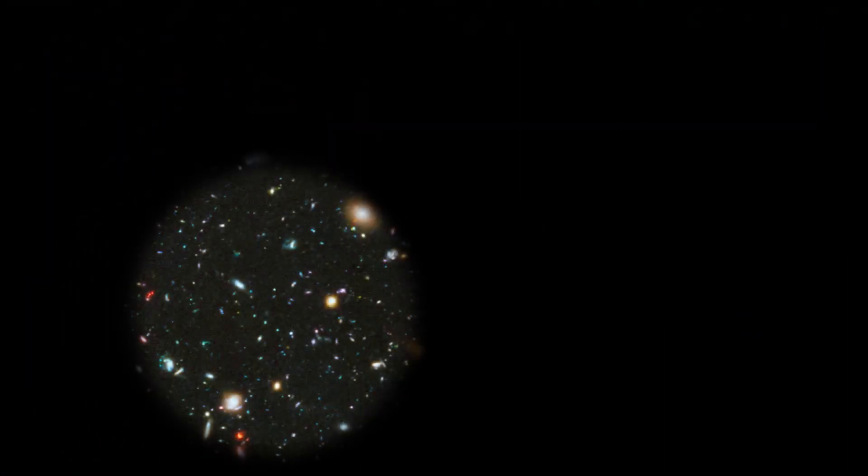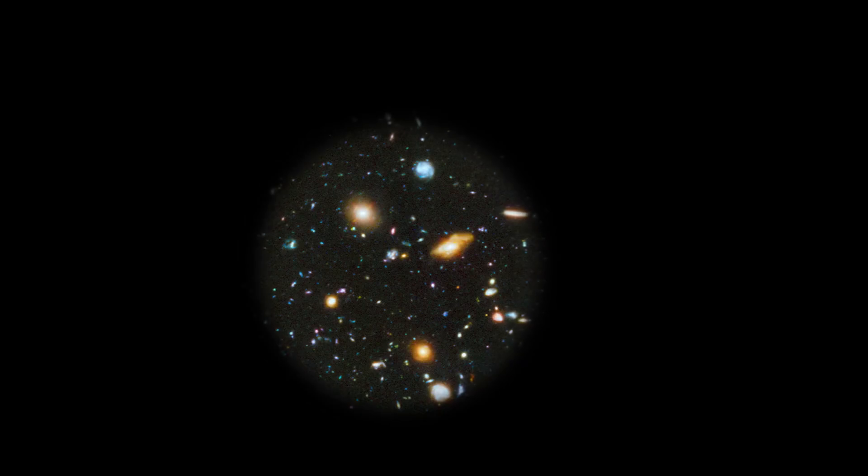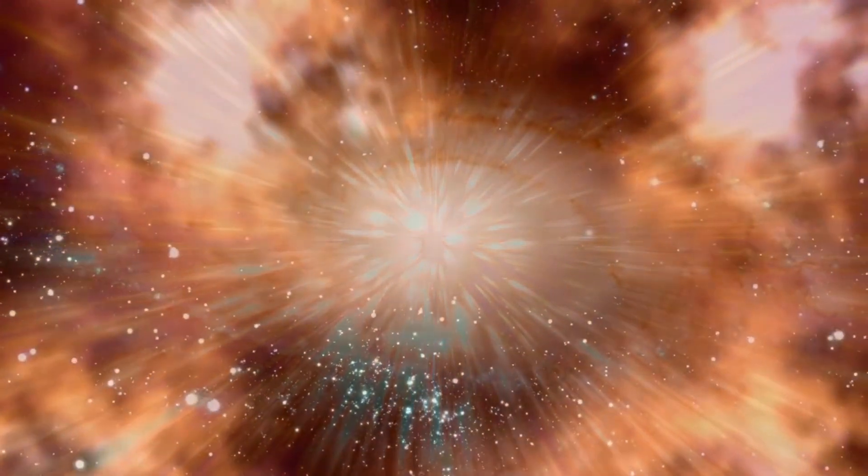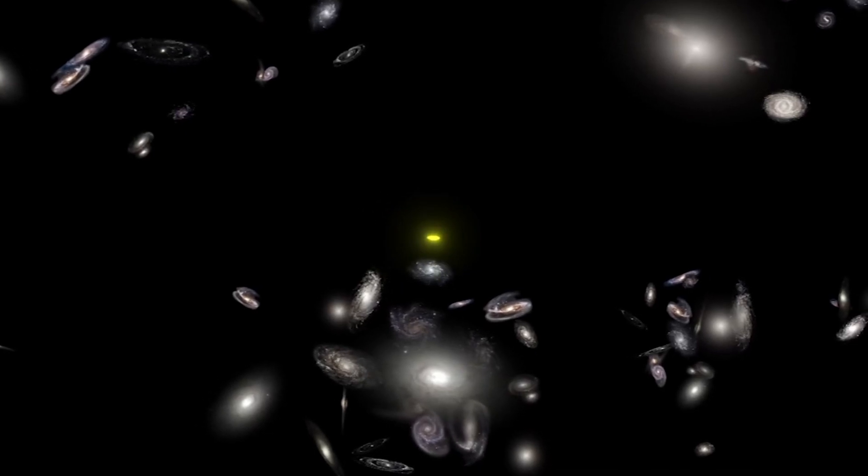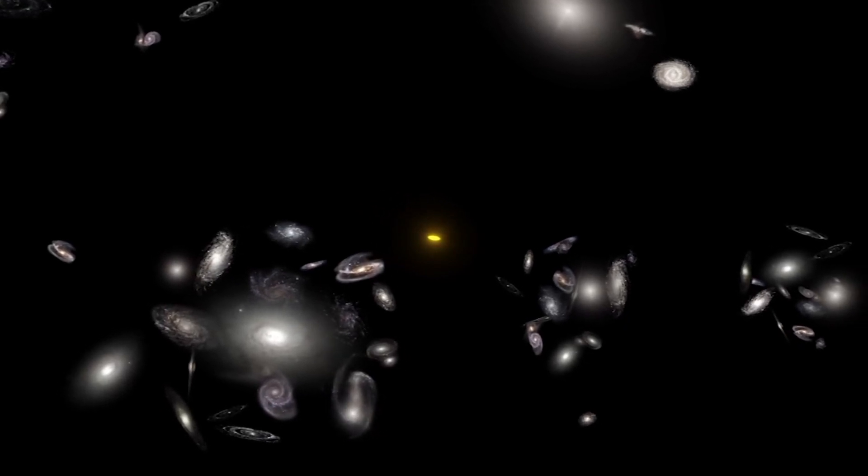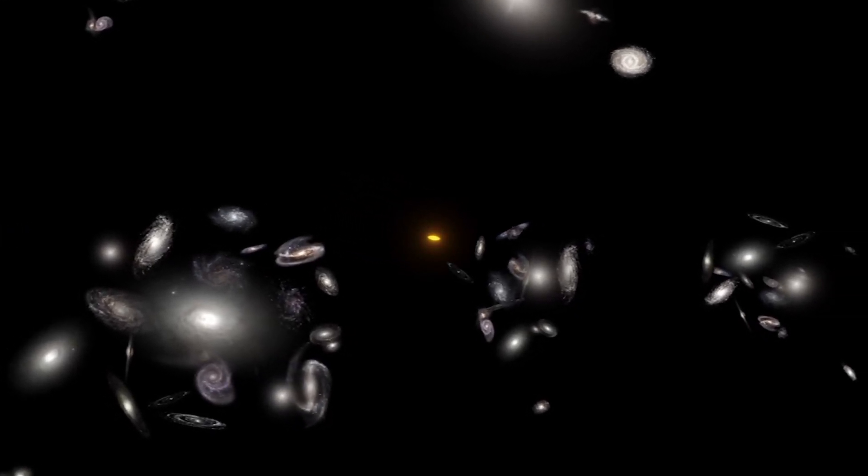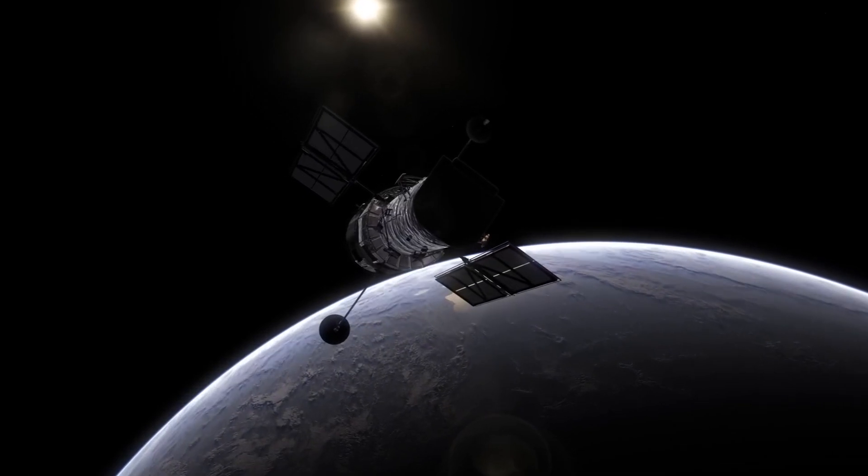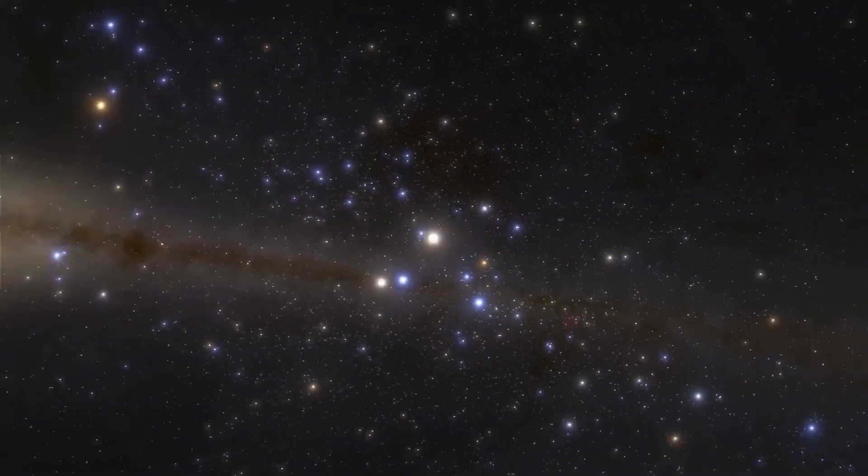The striking images captured by the James Webb Telescope have challenged our understanding of the origins of the universe. Specifically, these images directly contradict the Big Bang Hypothesis, which has long been considered an unquestioned truth by most cosmology theorists. The galaxies captured in these images appear to be too small, smooth, old, and numerous compared to the predictions of the Big Bang Hypothesis. The fact that the observed galaxies are two to three times smaller than similar galaxies imaged by the Hubble Space Telescope completely defies the expected behavior in an expanding universe.